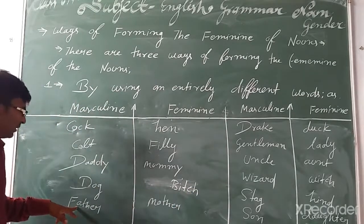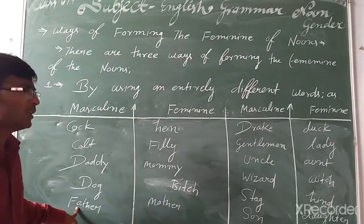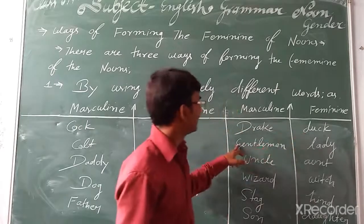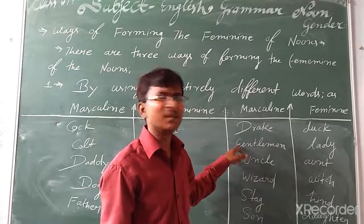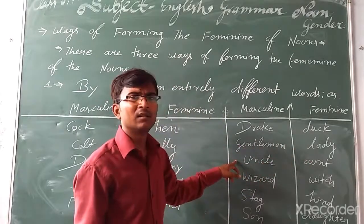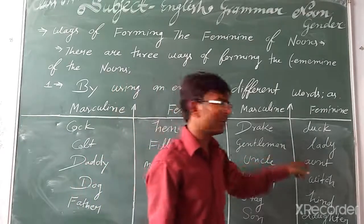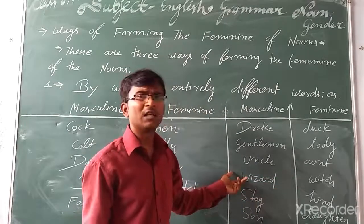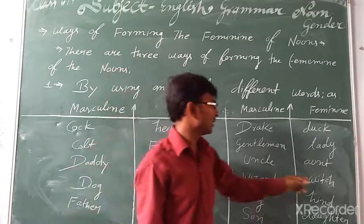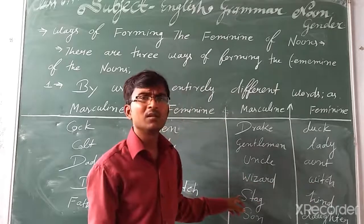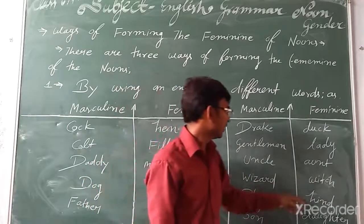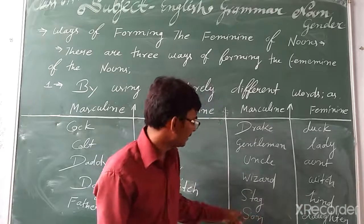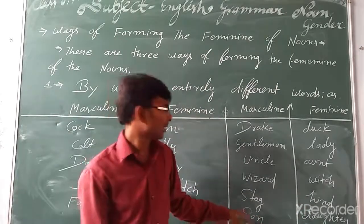The masculine gender is 'drake' — its feminine gender is 'duck'. 'Gentleman' — the feminine gender is 'gentlewoman'. 'Uncle' — the feminine gender is 'aunt'. 'Wizard' — the feminine gender is 'witch'. And finally, 'son' — the feminine gender is 'daughter'.